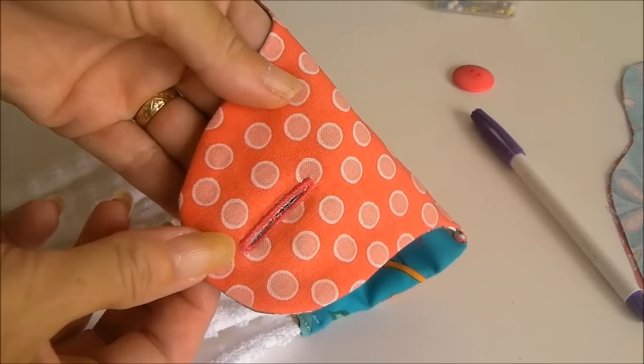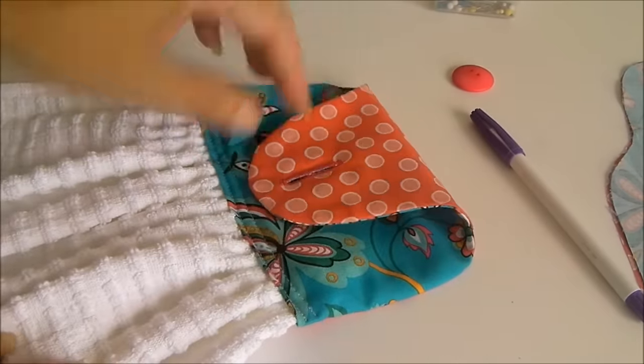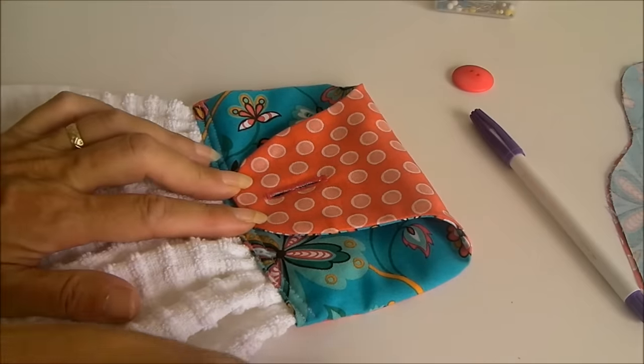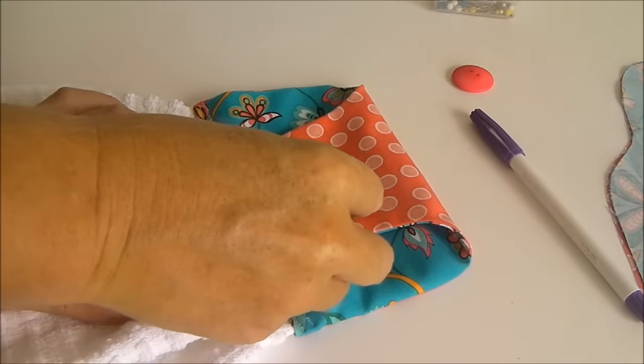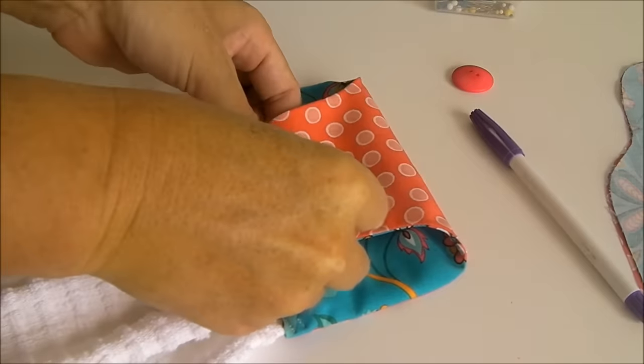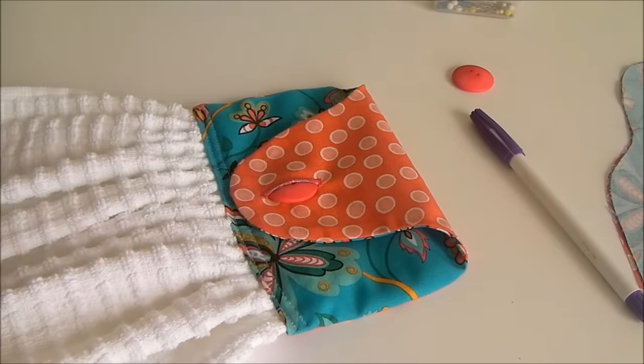So my buttonhole's completed. The machine did a great job and it looks really neat. So now it's just time to put the button on and we will be done. So I'm folding over the top, finding out where I want my button to be. I'm just going to thread the button halfway through the hole.